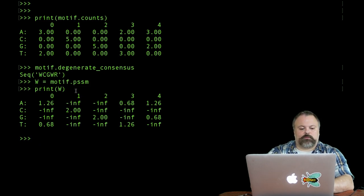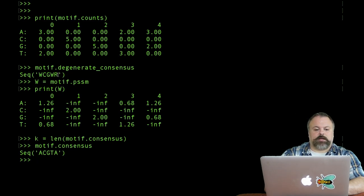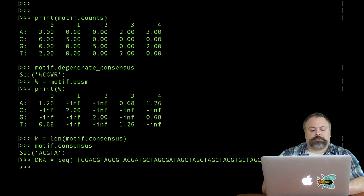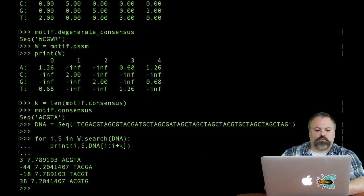In order to use this, what we could first do is define a length k, which is going to be the len of our motif.consensus. Motif.consensus is different from the degenerate consensus in that it's just showing the most frequently occurring character at each position rather than IUPAC codes at positions that are ambiguous. I can use this PSSM W to loop through a DNA sequence. If I have a DNA sequence in mind, I could search through here and check each k-mer computed score and print it out if it is above some defined threshold. I could say for i, s for each position and score in w.search of DNA and print out the position score and the k-mer at the position i.